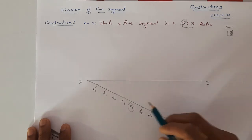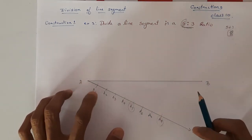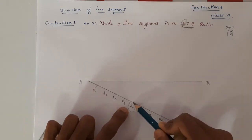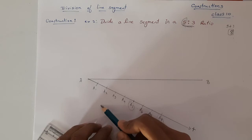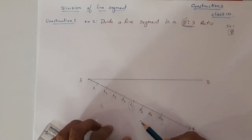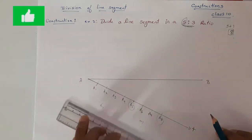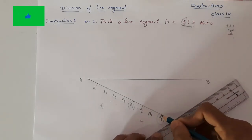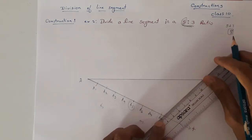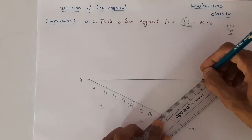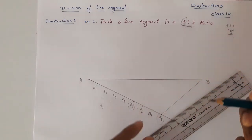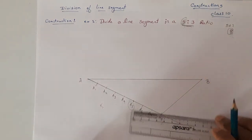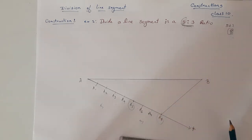From A to A5 there are five equal parts — that represents the first ratio. From A5 to A8 there are three parts — that represents the second ratio. So we have a 5:3 split. Now join the last point A8 to point B. This is a very important step — make sure your pencil is sharp, because a thick line will give you the wrong answer.